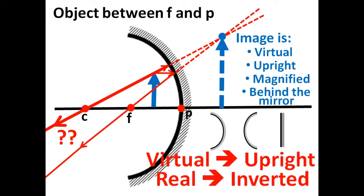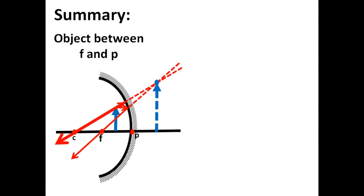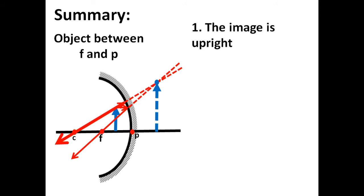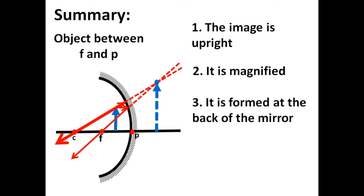That brings us to the end of the class. Here is a summary of the characteristics of the image formed by a concave mirror when the object is between F and P: 1. The image is upright. 2. It is magnified. 3. It is formed at the back of the mirror. And lastly, it is virtual.